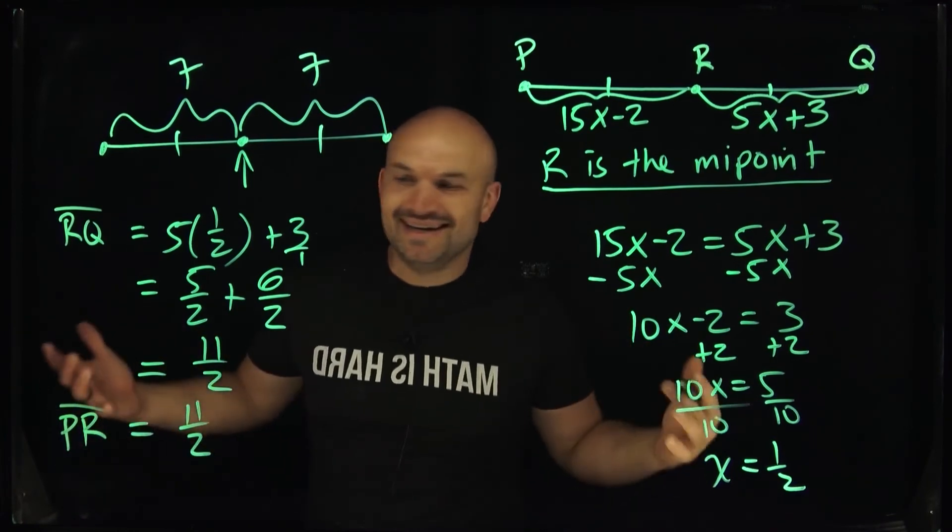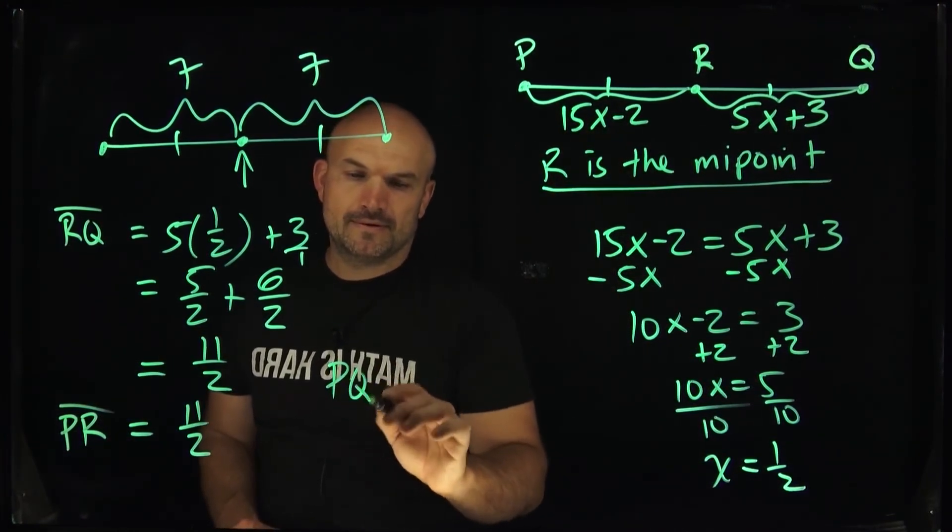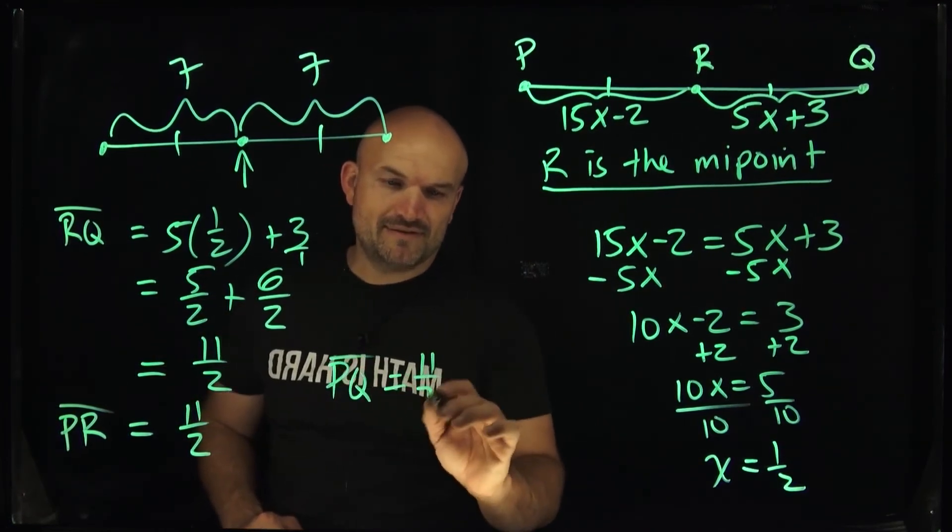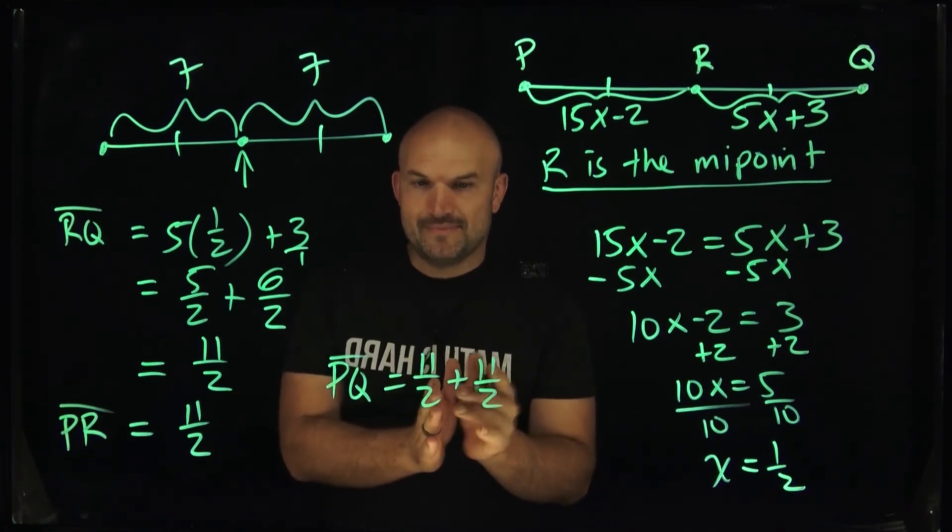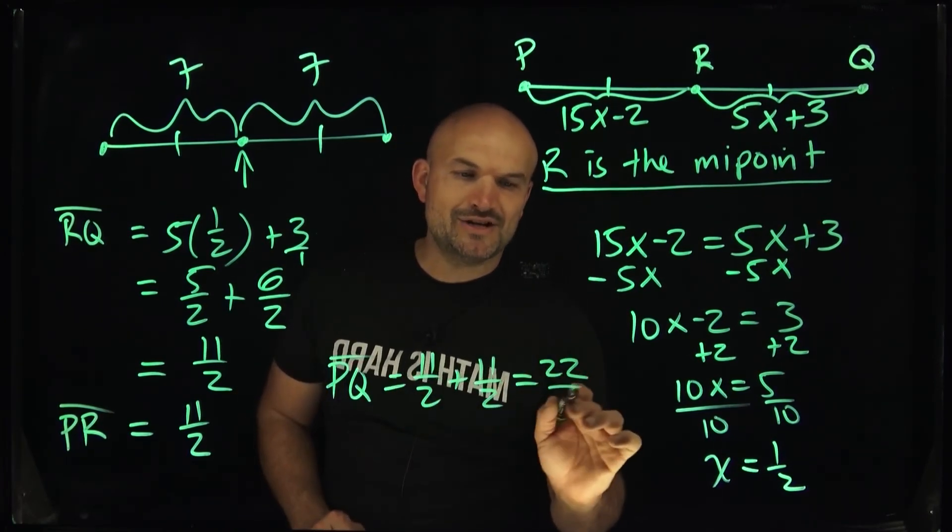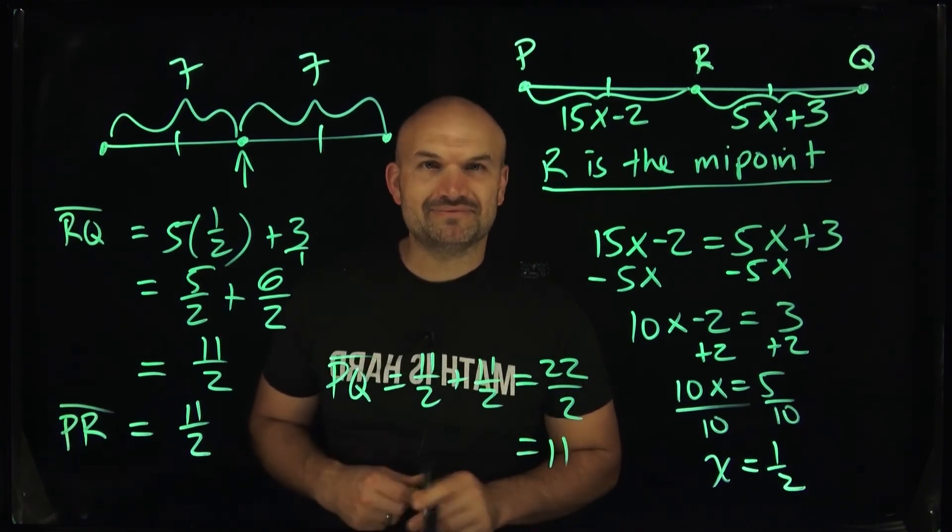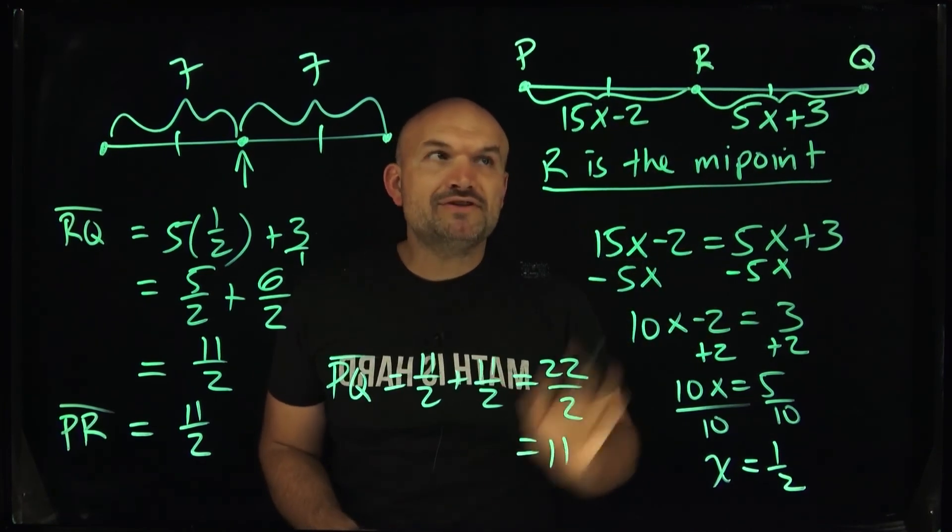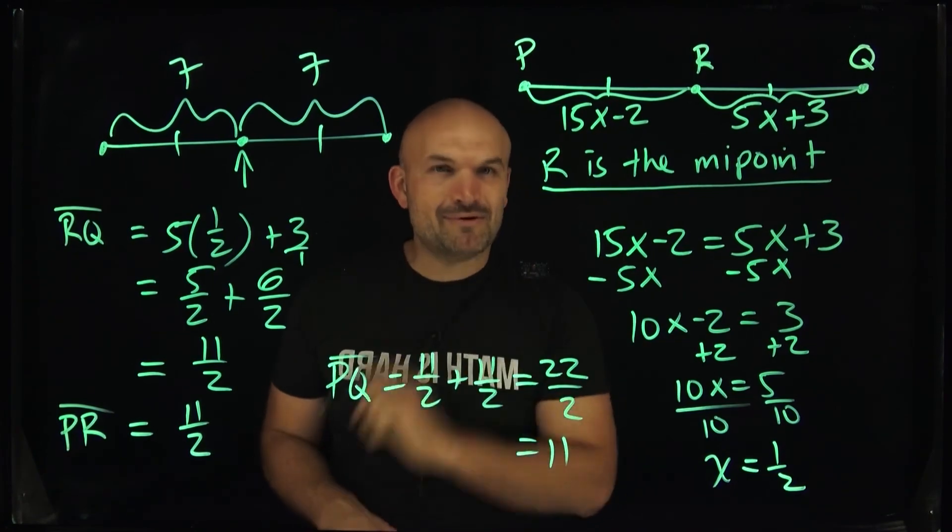And let's just say, just for fun, what if I wanted to go ahead and find the length of PQ? Well, then what could I do? I have 11 halves plus 11 halves, right? So that's going to be 11 halves plus 11 halves. And remember, when you have that, common denominators are the same. So therefore, that's going to be 22 halves, which you guys can simplify here to 11. Now, this video is helpful because we knew R was the midpoint. But what if we don't know R is the midpoint? Then we're going to have to approach the problem a little bit differently. And that will come up in the next video.